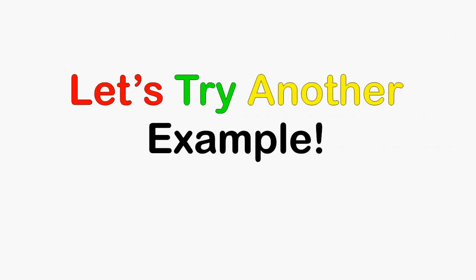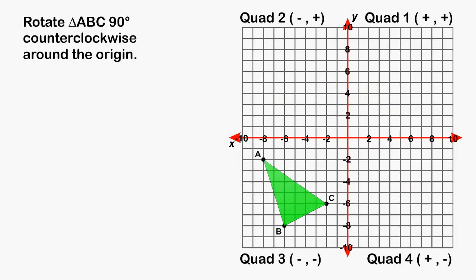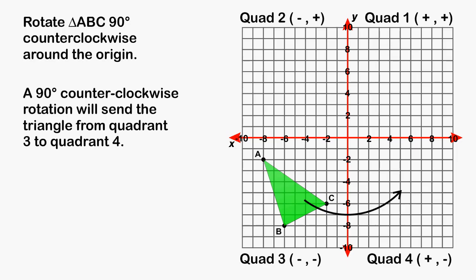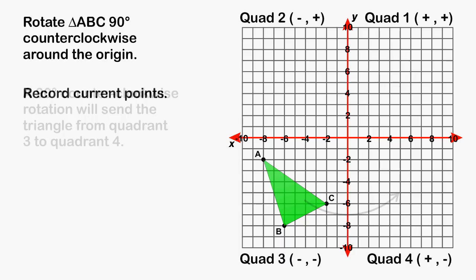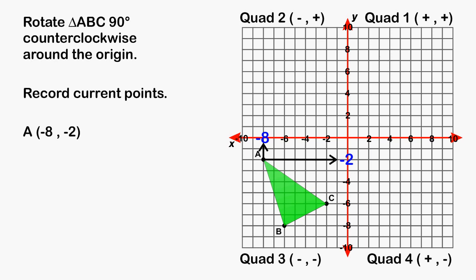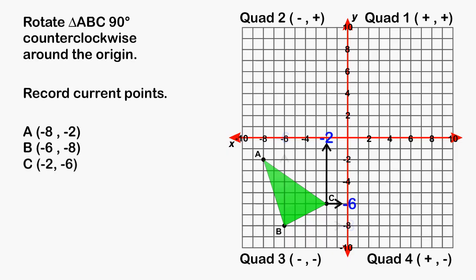Now we are going to try another example, but this time we are going to rotate an object counterclockwise around the origin. We have a triangle located in quadrant number 3, and we are going to rotate that triangle counterclockwise. If we rotate this triangle 90 degrees counterclockwise, we should end up somewhere in quadrant number 4. To find the precise location, we are going to begin by recording the current location of points A, B, and C. Point A is located at negative 8, negative 2. Point B is located at negative 6, negative 8. And point C is located at negative 2, negative 6.